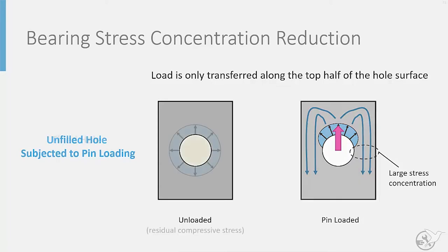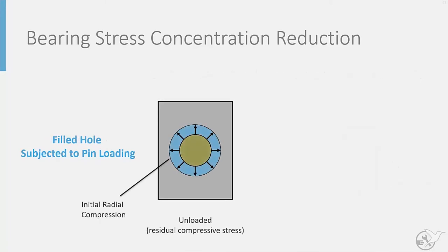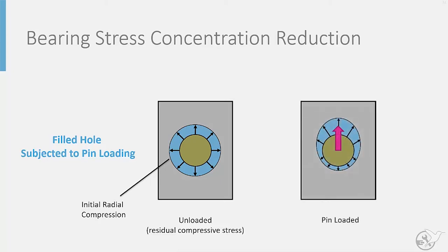If the hole is filled, the fastener begins with a radial compressive load acting all around it. As the bearing load is added, a reduction in radial compression on the lower half of the hole and an increase in the radial compression on the upper half of the hole transfers this load.